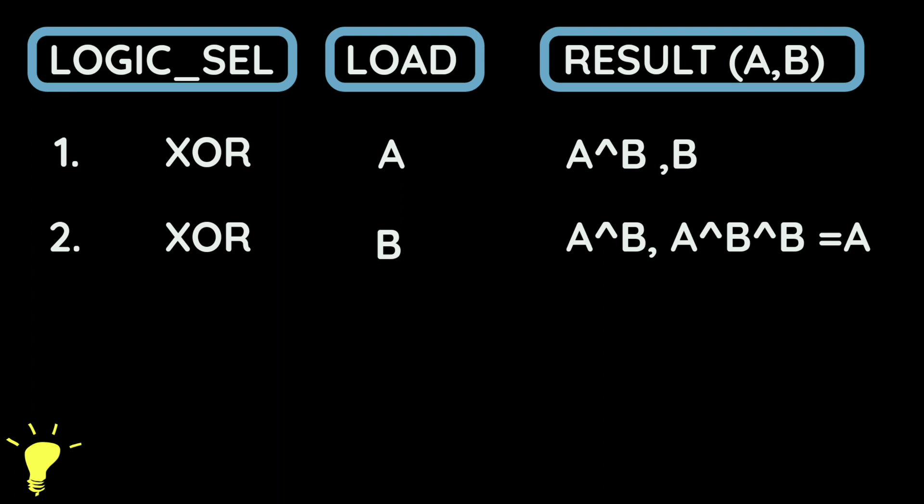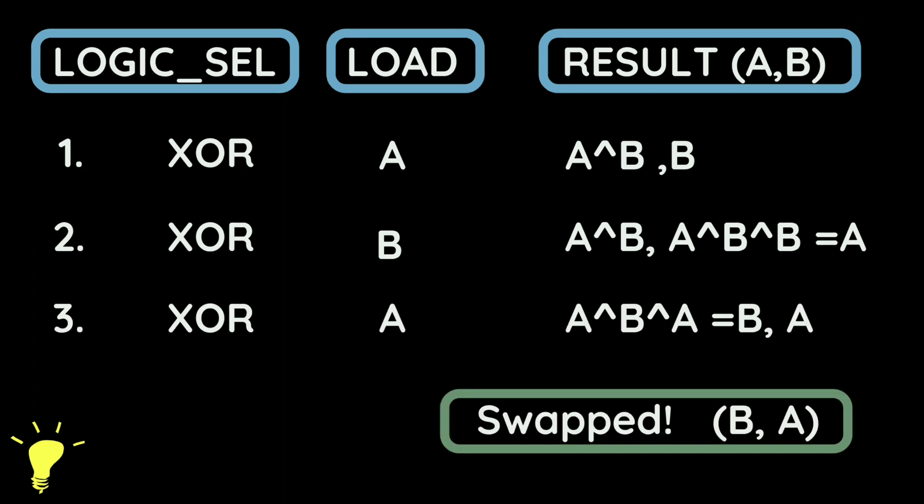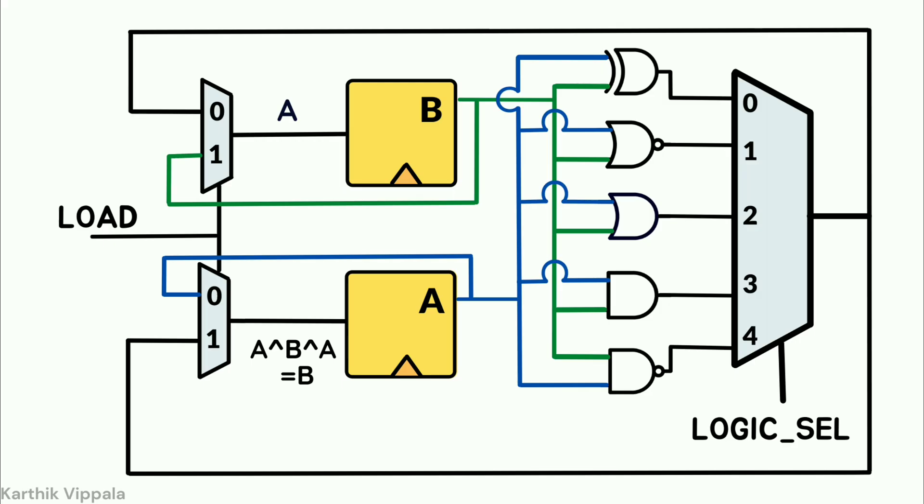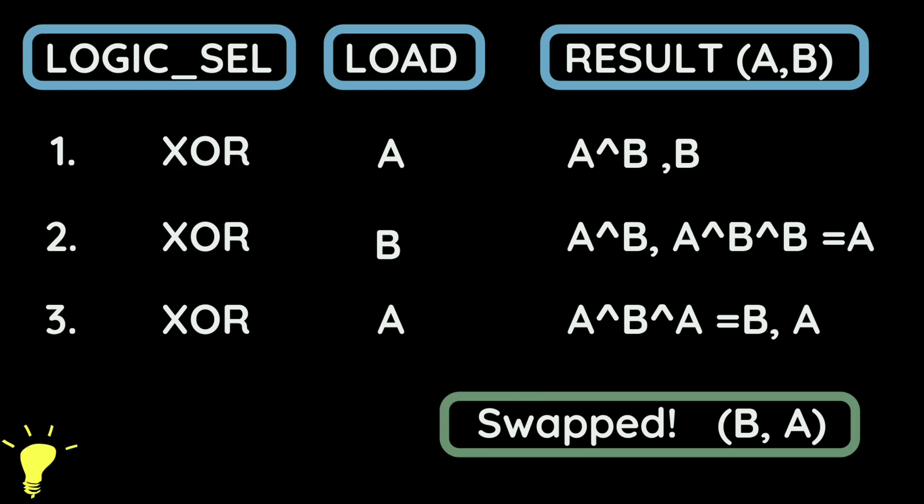Now the B register has the content of A. In A, we have A XOR B, and in B we have A. Again, in the next clock cycle, I'm gonna perform the XOR operation between the data of A and B. Now we will load the data of the multiplexer into A, and B will be the previous value. So now A is A XOR B XOR A. As you know from the previous observations, A XOR A is 0, and now 0 XOR B is B. So now register A has B values and register B has A value.